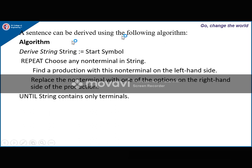A sentence can be derived using the following algorithm. First, declare the string as the start variable. Then repeat: choose any non-terminal in the string, find a production with this non-terminal on the LHS, and replace the non-terminal with one of the options on the RHS of the production. Do this until the string contains only terminals. This procedure can be used to derive strings from a given grammar.